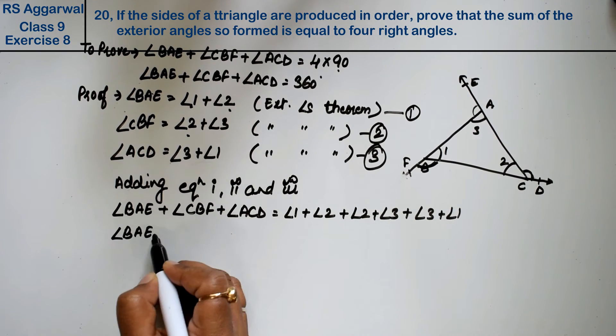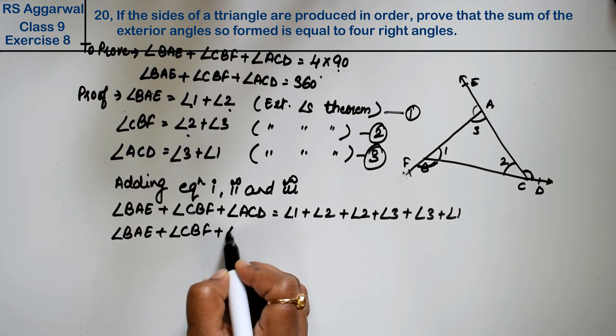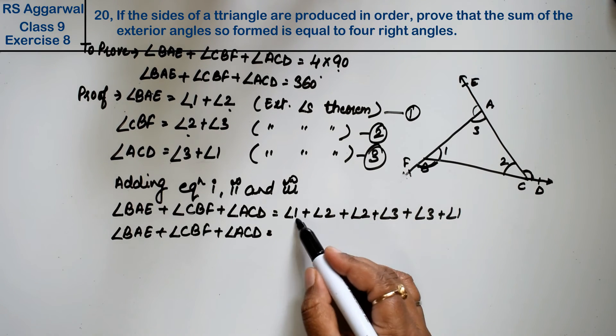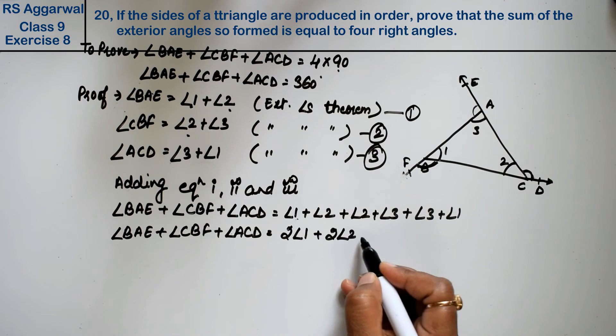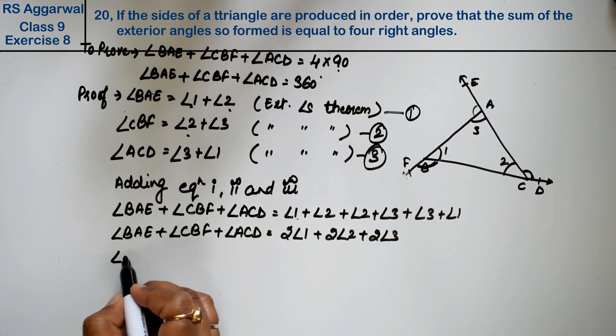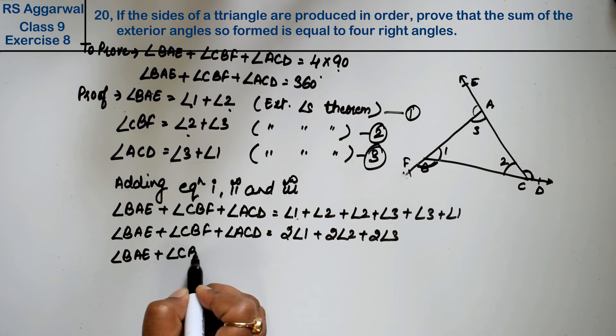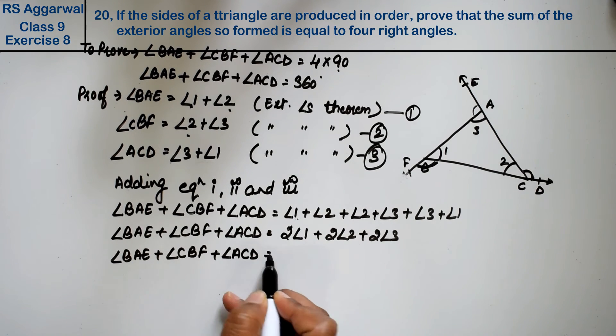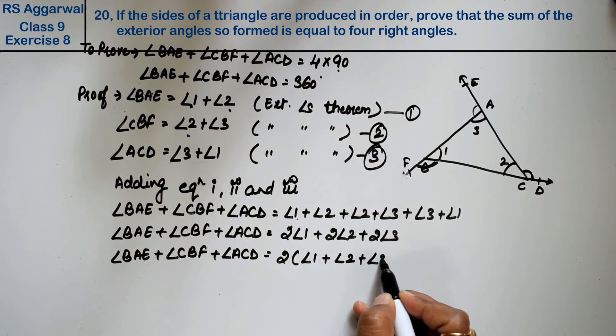So angle BAE plus angle CBF plus angle ACD equals twice of angle 1 plus twice of angle 2 plus twice of angle 3. Taking two common, we get 2 times angle 1 plus angle 2 plus angle 3.